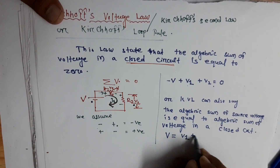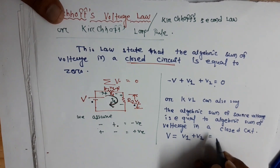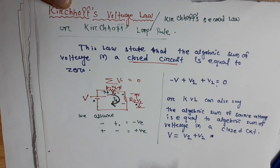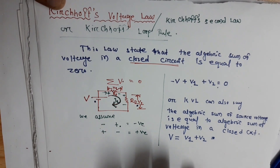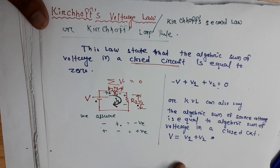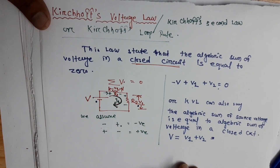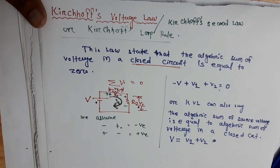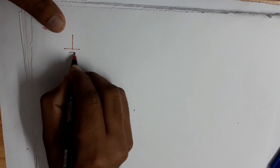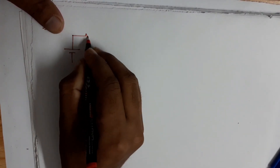The necessity of KVL is where we need to find some current in a closed circuit. KVL is also used in mesh analysis or higher-level circuit analysis. Let's take an example so you can better understand.